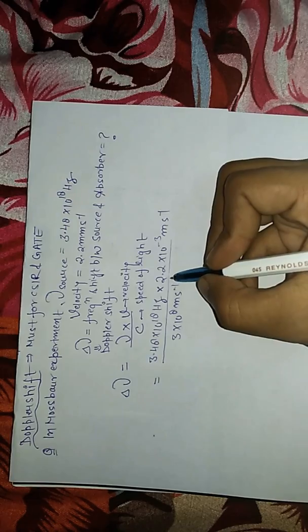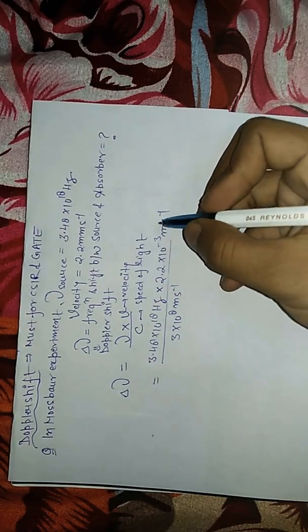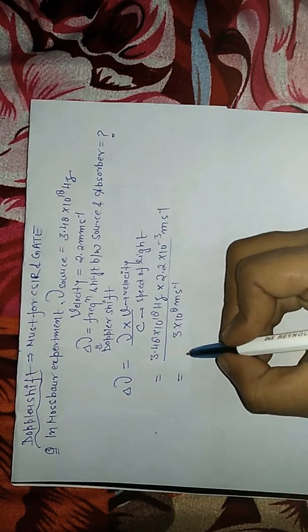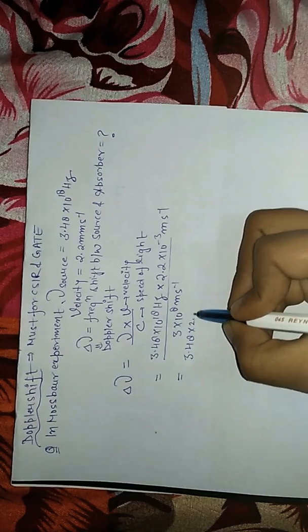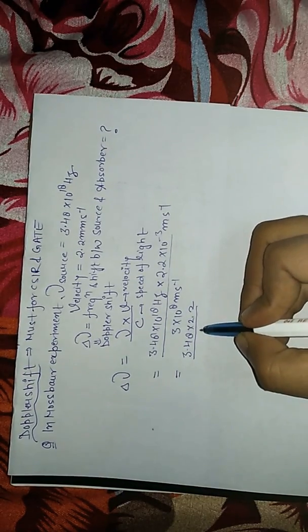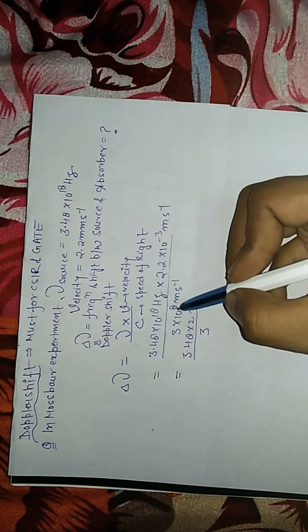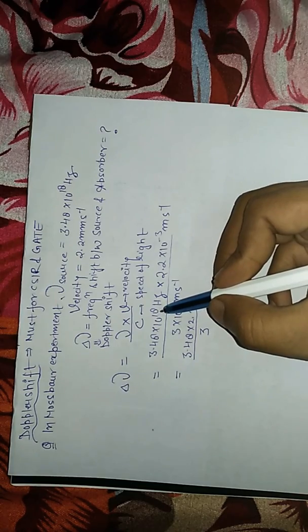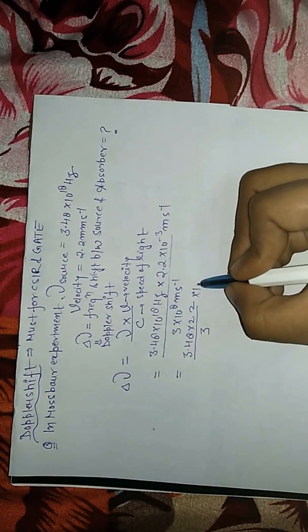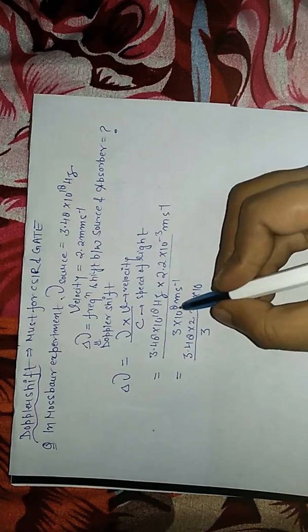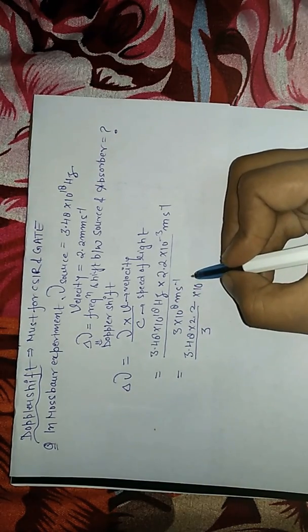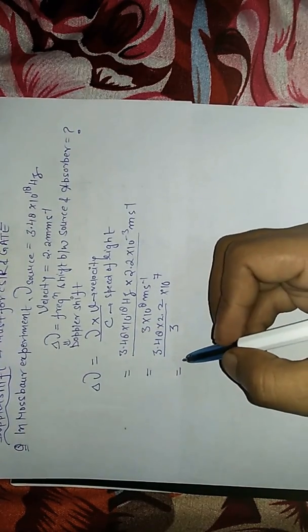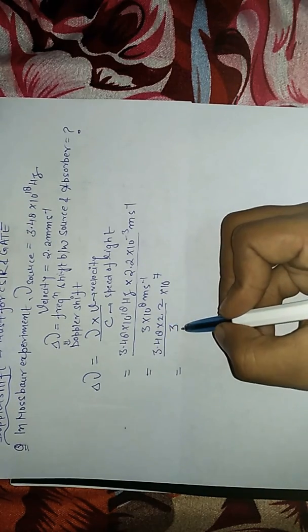It is in meter per second, that's why we change it from millimeter per second to meter per second. On solving, you can solve just 3.48 into 2.2 divided by 3, and this is 18, this is -3, this is 8, so this will become -11 and -18, so this will become 10 raised to power 7.